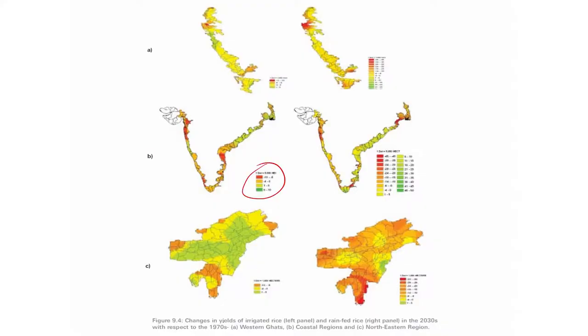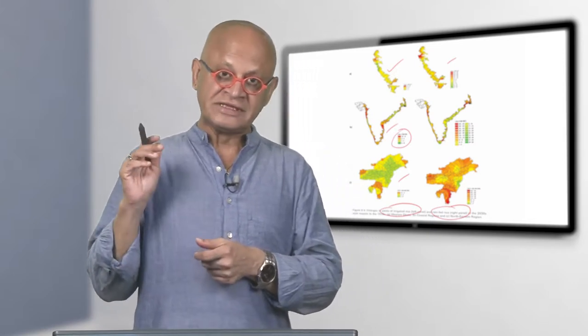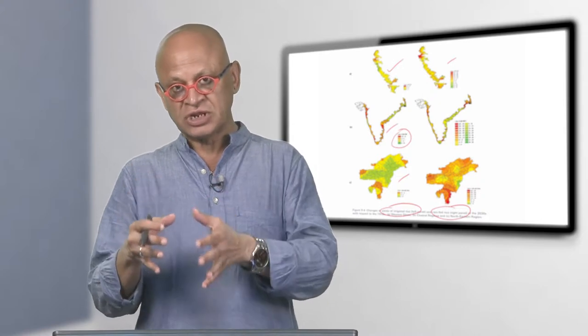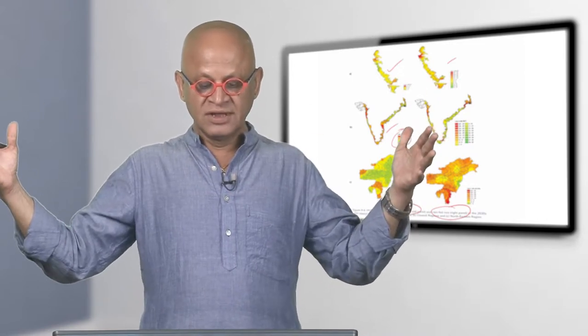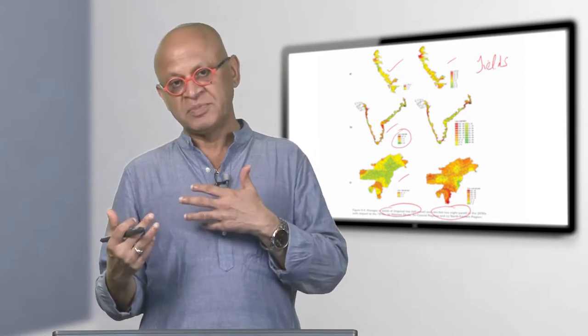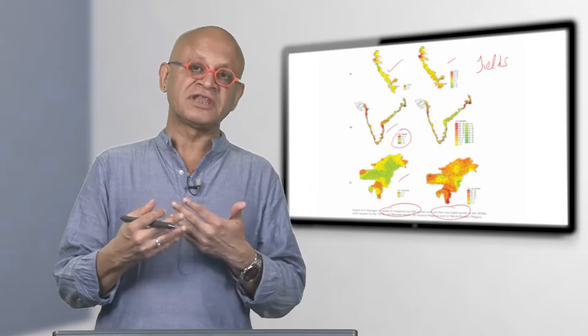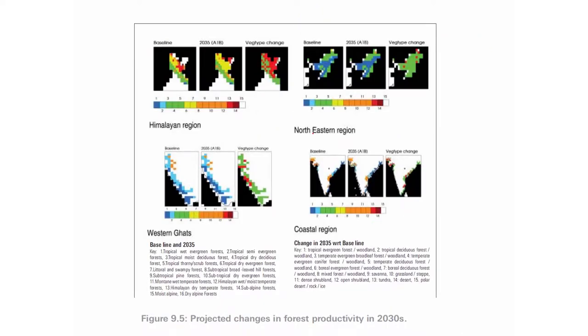India is now doing a much better projection with its own Earth system model. This is the changes in yields of irrigated rice and rain fed rice for different regions - western ghats, coasts and the northeast. Wherever there are red, the yield is expected to decrease. The crop model or the yield model was forced with the projections from this regional model, taking temperature and precipitation.